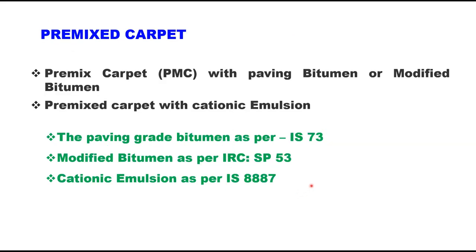Premix carpet can be provided either with paving bitumen, modified bitumen, or emulsion. When using paving bitumen, it should satisfy all requirements of IS-73. Modified bitumen should be tested as per IRC SP-53. And cationic emulsion should satisfy requirements of IS-8887 before use.